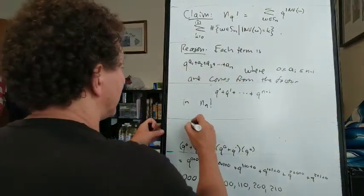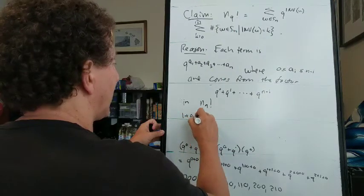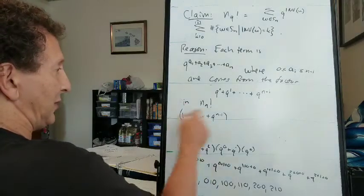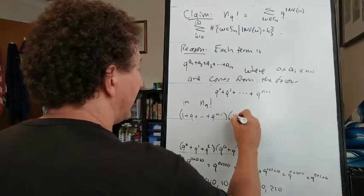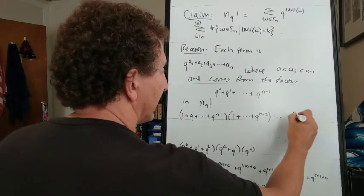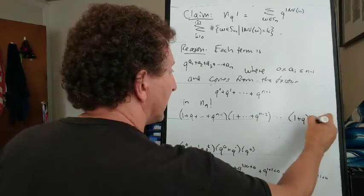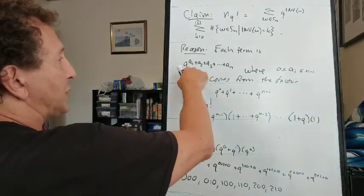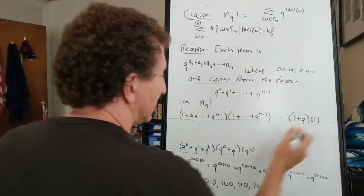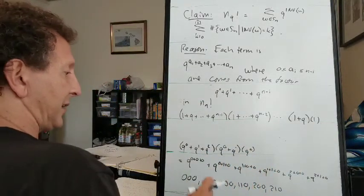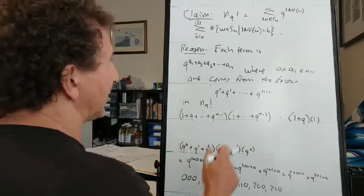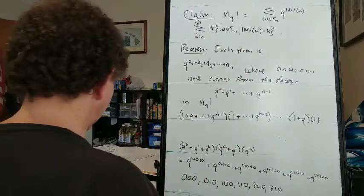So when we write this out, we've got the power of q is anywhere between 0 and n minus 1, and then anywhere between 0 and n minus 2, etc. So each one of these exponents comes from a different factor in n factorial. When we add them together and look at the coefficient of q to the k, we get precisely the number of permutations that have k inversions.